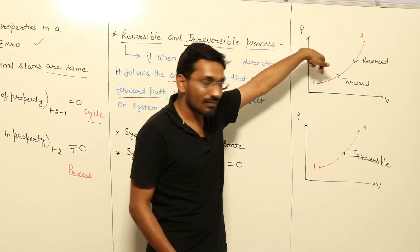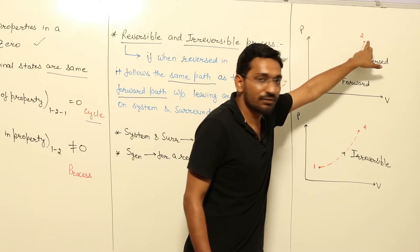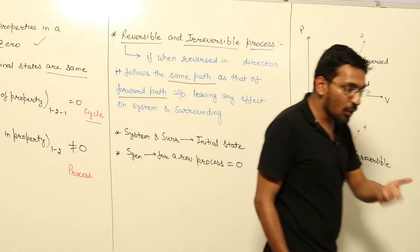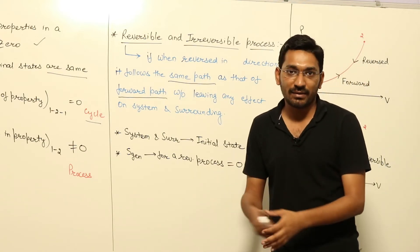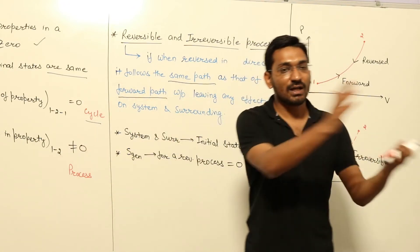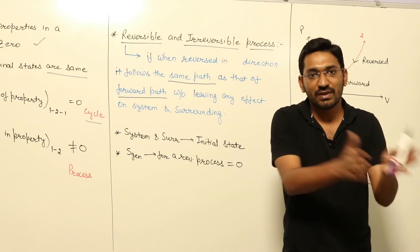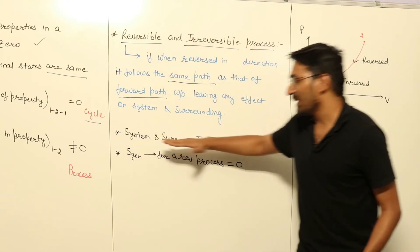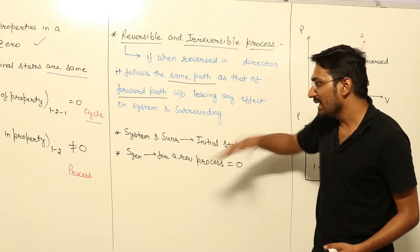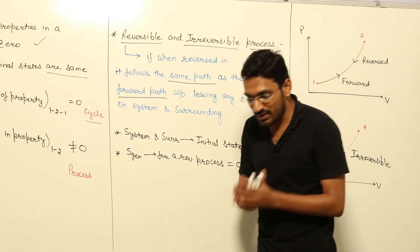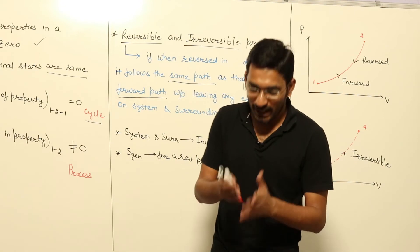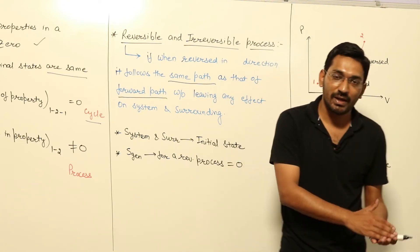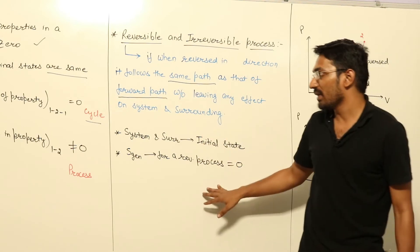When the system is reversed from point 2 to point 1, if there is no effect on either the system or the surrounding — meaning both return to their initial states — then that process is a reversible process. If there is any effect either on the system, on the surrounding, or on both, during the forward or reverse process, then it is an irreversible process.